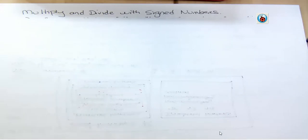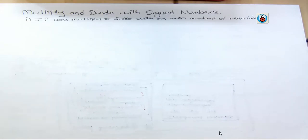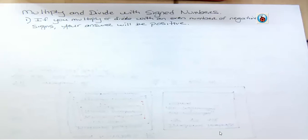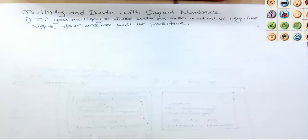When you're multiplying and dividing with signed numbers, there's two rules to remember. There's a lot of different ways to say this. I'm saying this in a way that makes sense to me.